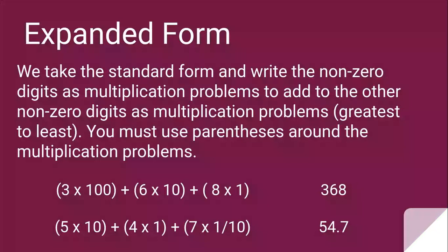So the first one is in parentheses 3 times 100 plus in parentheses 6 times 10 plus in parentheses 8 times 1. And we'll just take this one parentheses at a time. 3 times 100, that's 300. Plus 6 times 10, that's 60. Plus 8 times 1, that's 8. So what's 300 plus 60 plus 8? That's 368, which you can see on the right. That's the standard form of it.